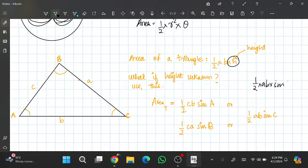1/2 times ab times sin C. What this basically means is that if you're given two sides and the angle between them, you can easily find the area. So let's say 1/2 times my angles, multiply that, so ac times sin of this angle, so sin B.